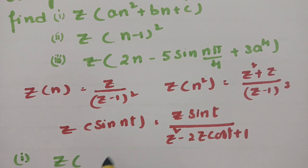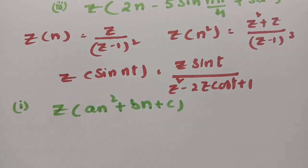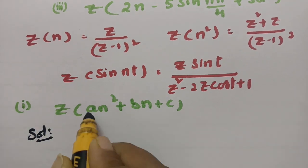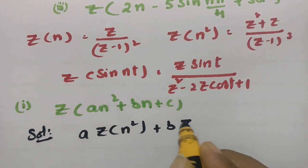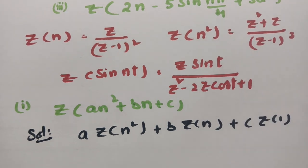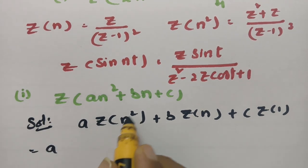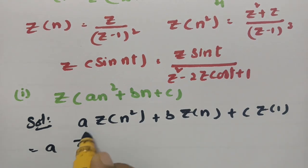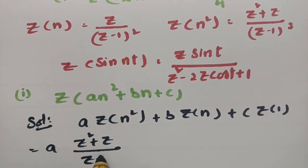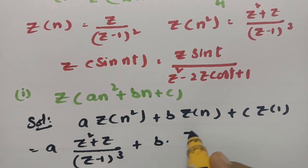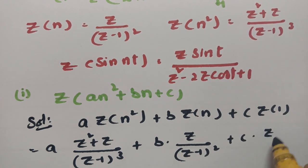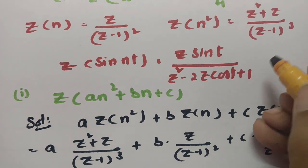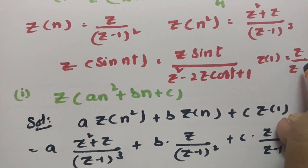The first equation is the Z transform of an² + bn + c. Using the linearity property, we can bring the constants outside: this is a·Z{n²} + b·Z{n} + c·Z{1}. Now substituting the formulas: Z{n²} = (Z² + Z)/(Z−1)³, Z{n} = Z/(Z−1)², and Z{1} = Z/(Z−1).